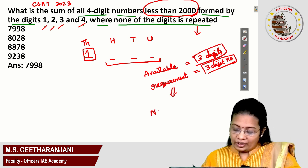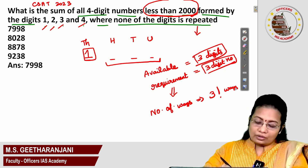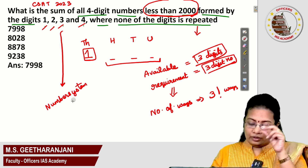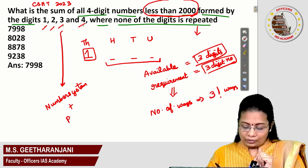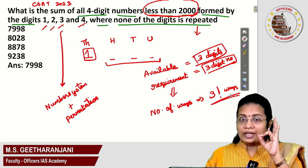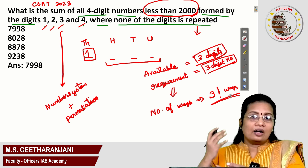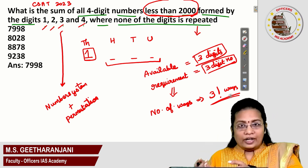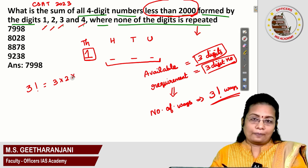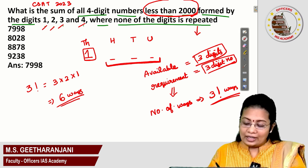This question is from the number system topic along with some ideas from permutation. The number of ways to create a three-digit number using three different digits is three factorial ways. This is a formula from permutation: when three different digits are used to create a three-digit number, it can be obtained in 3! ways. Three factorial means 3 × 2 × 1 = 6. So in six ways these three values can be arranged.